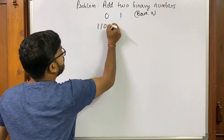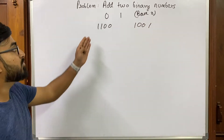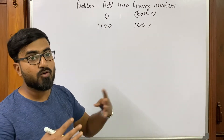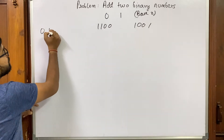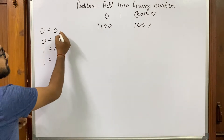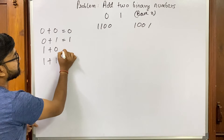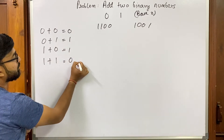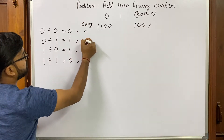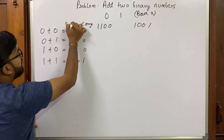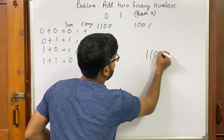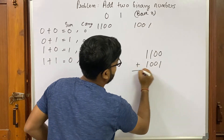Let's take an example: I have 1100 and 1001, these are two binary numbers we need to add. Since there are only two digits available, there are four possible combinations of addition: zero plus zero, zero plus one, one plus zero, and one plus one. Zero plus zero gives zero, zero plus one gives one, one plus zero gives one, and one plus one gives zero with a carry of one. In all other cases the carry is zero.